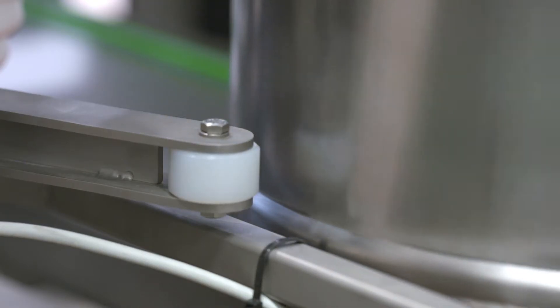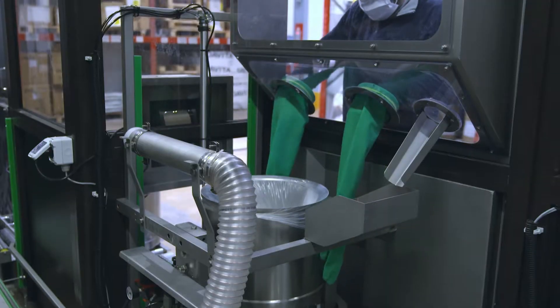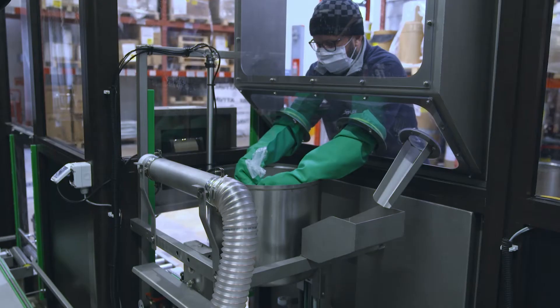At the end of the weighing cycle, the buckets with the recipes are unloaded into an exit roller conveyor.